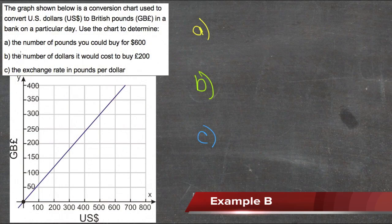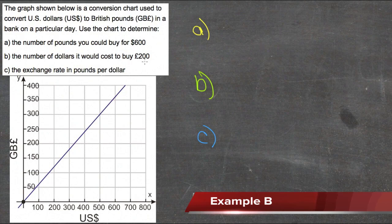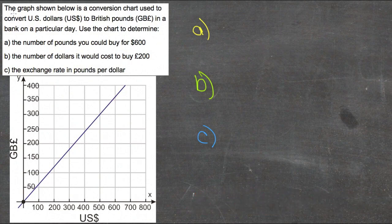Use the chart to determine the number of pounds you could buy for $600, the number of dollars it would cost to buy 200 pounds, and the exchange rate in pounds per dollar.